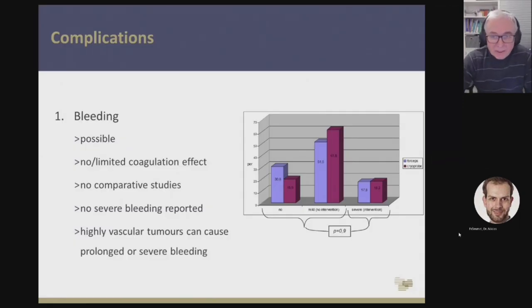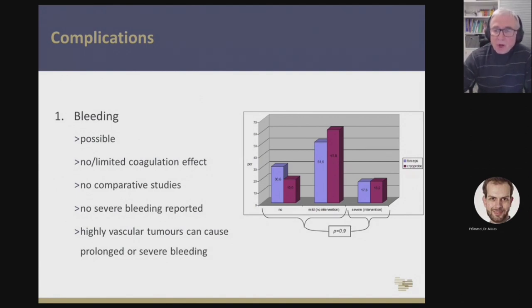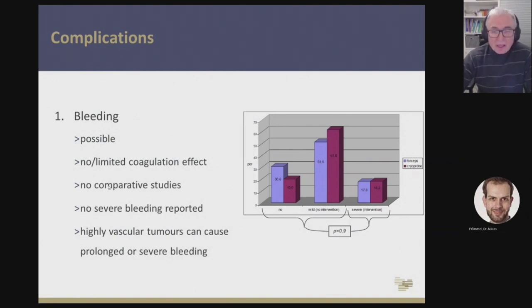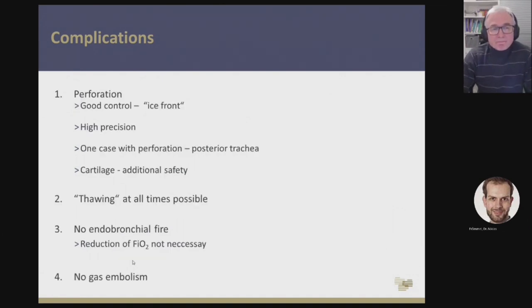Regarding complications: bleeding is possible, and we have no trials showing how much bleeding occurs with cryo-recanalization. We only have one trial in the central airways comparing forceps with cryo for biopsy purposes, which showed no difference in severe bleedings. The problem is that we have no or limited coagulation effect. In studies so far, no severe bleedings have been reported, but from personal experience I know that in highly vascularized tumors, we can have prolonged or severe bleeding. So in cases like carcinoids or renal cell carcinoma, cryo extraction is not the best option. But we have good control — we know where we are extracting, it's highly precise, and if placed at the wrong spot, you can just thaw and reposition the probe.